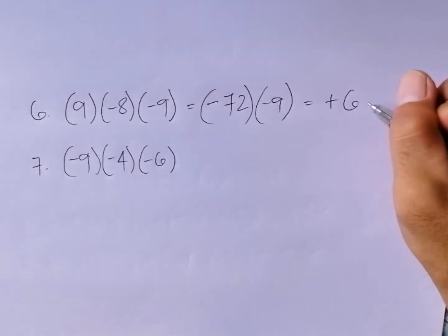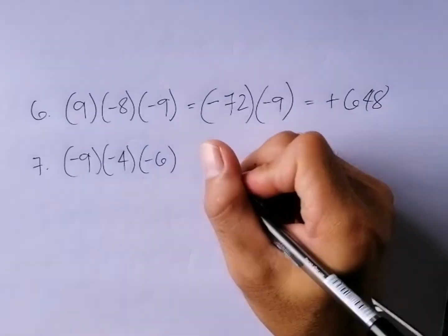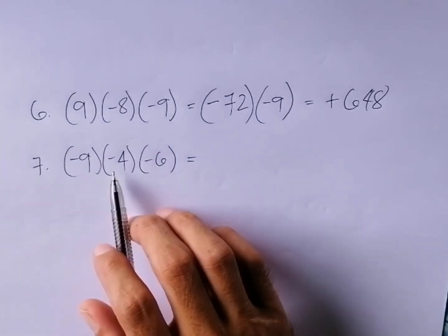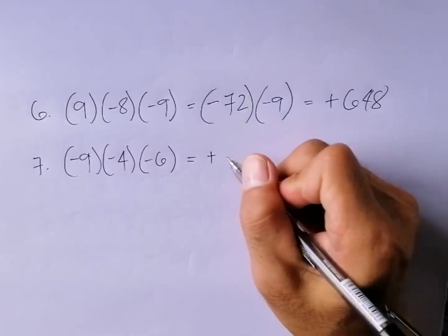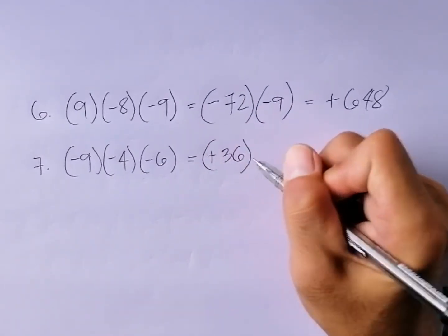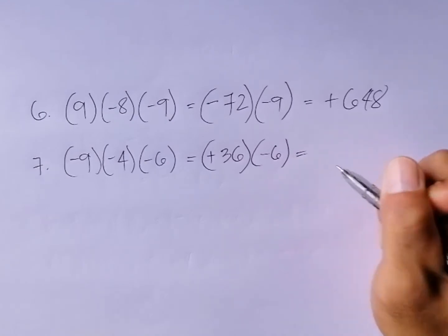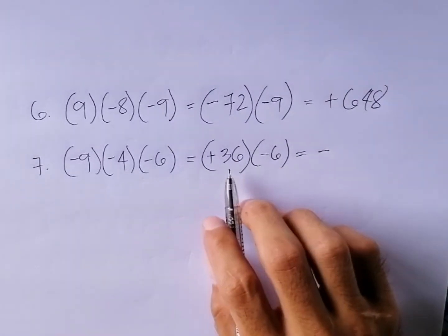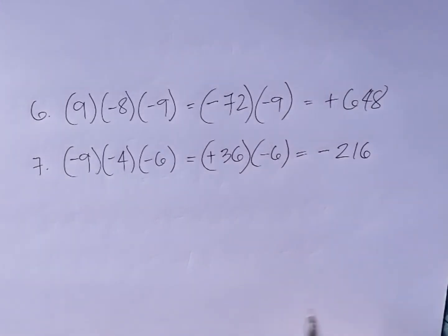Number seven: negative times negative is positive. Nine times four is equal to thirty-six. Then times three times negative six — positive times negative is equal to negative. Thirty-six times six is equal to two hundred sixteen. Therefore the answer is negative two hundred sixteen. See you next time.